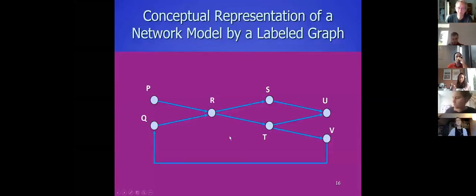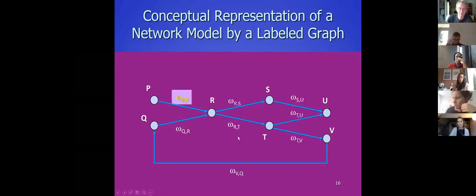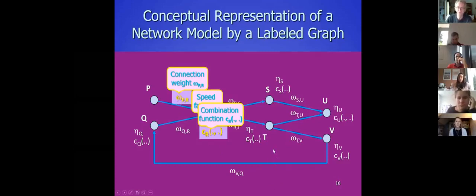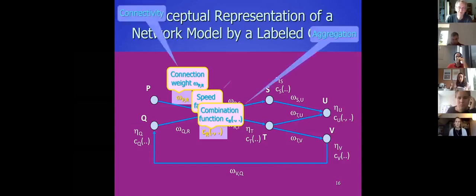You can consider the network in graph form as a labeled graph. The connectivity alone is only one-third of the characteristics. For a full specification you also have to add the weights, the speed factors, and the combination functions. If you put all these labels everywhere in the graph, this labeled graph is a complete specification. You can indicate these by numbers to make a specific design — that's the mental image you can have about it.